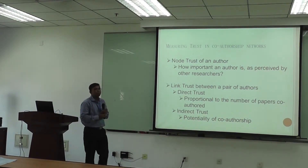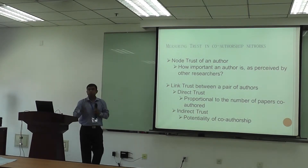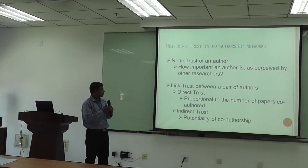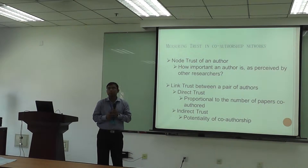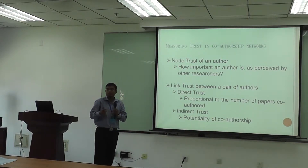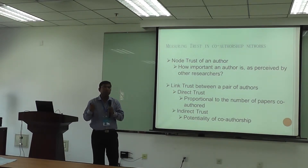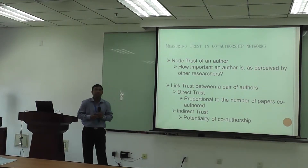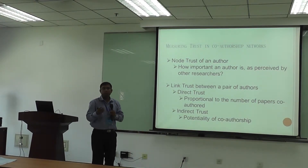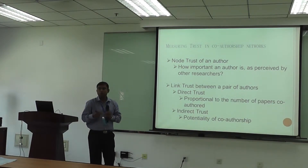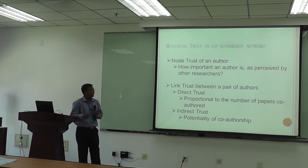The question is: how do we measure trust in a co-authorship network? The number of publications is one such metric, but there are several other ways. Trust can be perceived in two ways. One is a global concept — for example, an author universally recognized as very famous, like certain renowned researchers in India. Even if you don't work in that area, you know they are among the best authors. We term this kind of trust as node trust — a global property where other researchers have a perception of that particular researcher, whether they have worked with them or not.